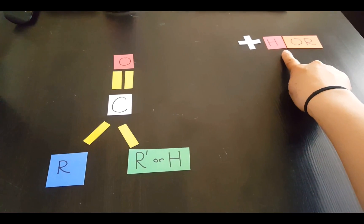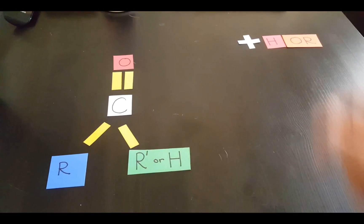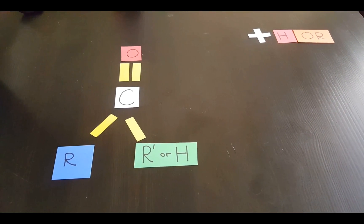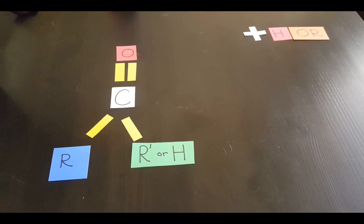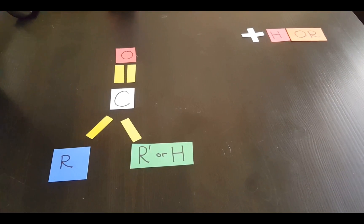This over here represents an alcohol. When this aldehyde or ketone reacts with an alcohol, it forms a hemiacetal. Let me show you how.